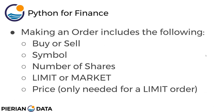The first thing you end up doing is when you click that button, an order gets created. And an order should include the following information: it needs to include buy or sell, symbol, number of shares, limit or market, and then the price. So let's actually discuss each of these.